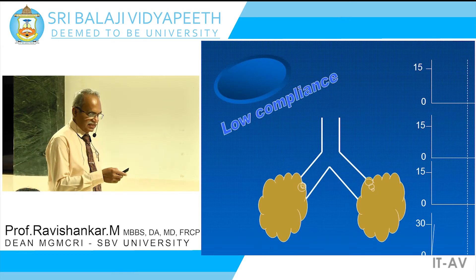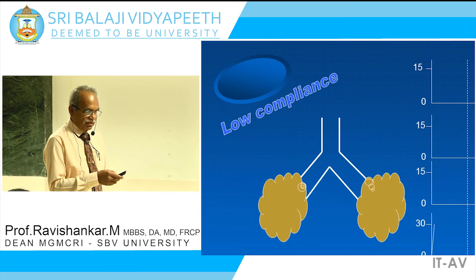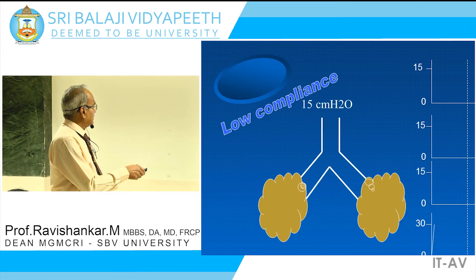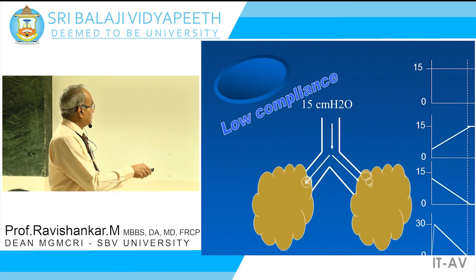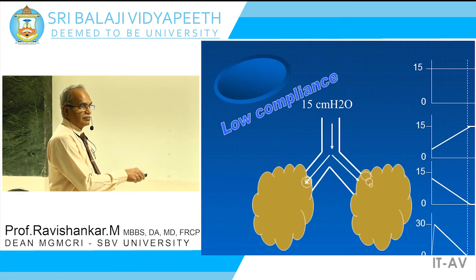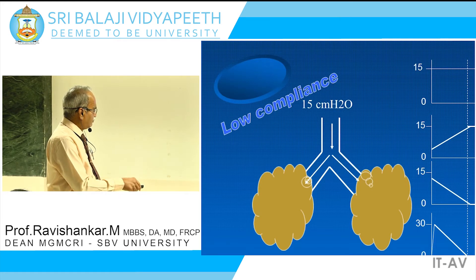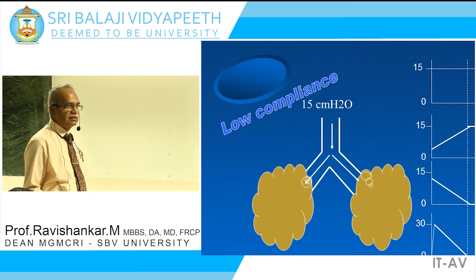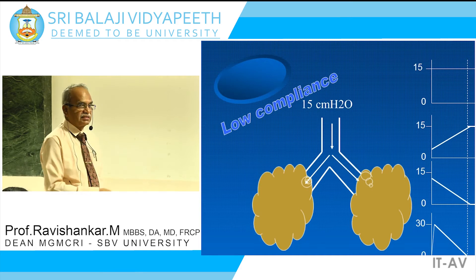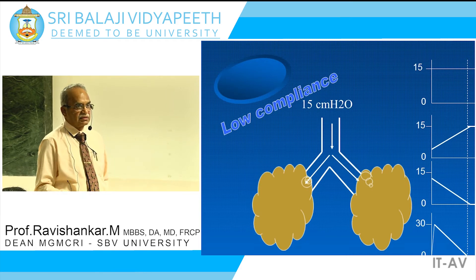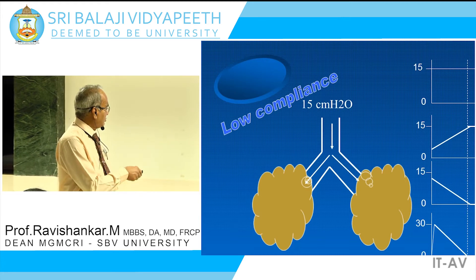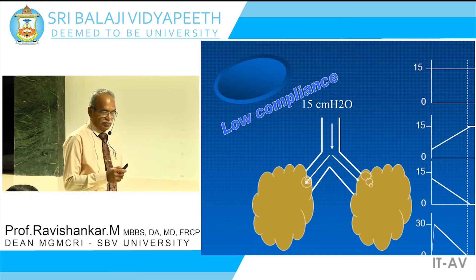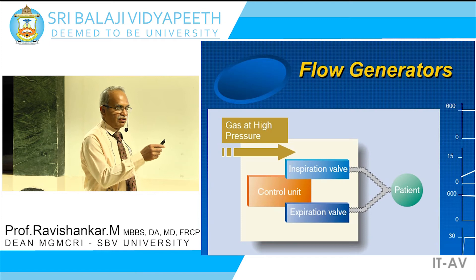And when compliance is low, what happens? The same 15 centimeters of water — when the compliance is less, the alveolar pressure equals the mouth pressure much faster. So the flow comes down much faster, and the volume delivered becomes less. When the compliance is less and you use a constant pressure ventilator, the volume delivery is less because the lung doesn't expand sufficiently to accommodate the air — it reaches pressure equilibrium much faster.